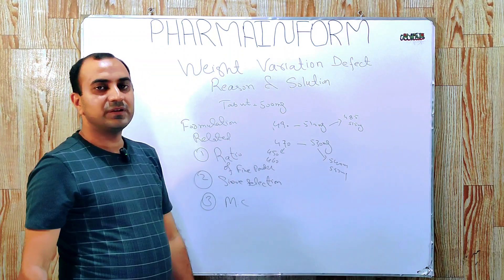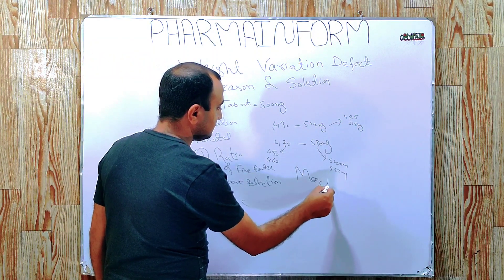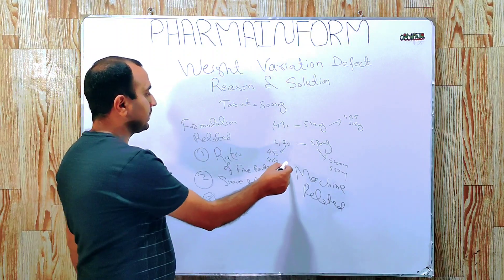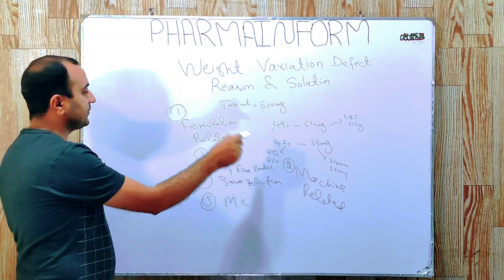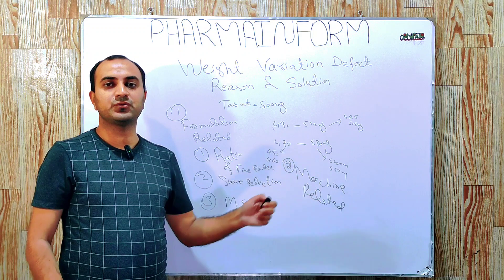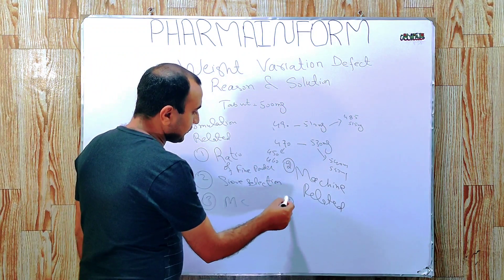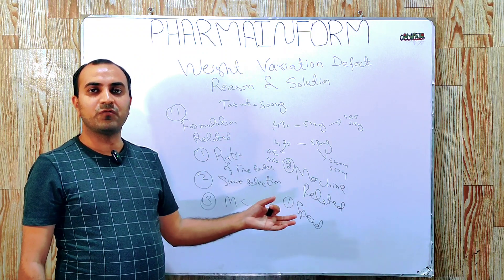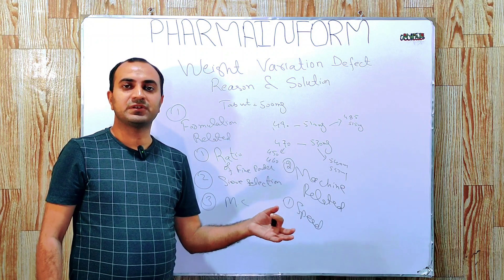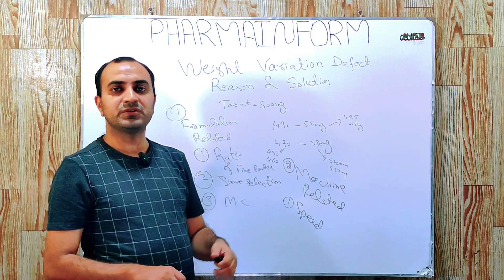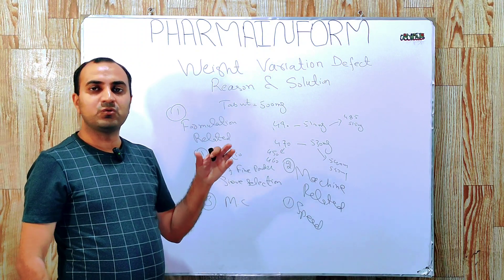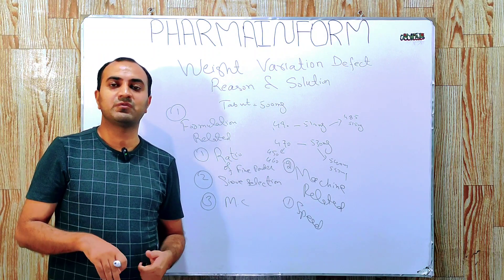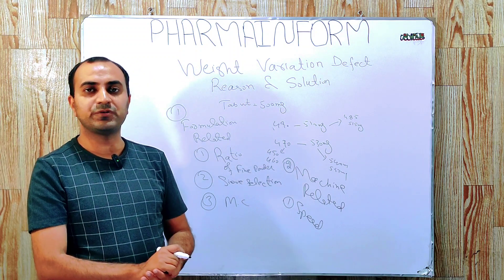The next category is machine related issues — what machine related issues result in weight variation? The first machine related issue is speed. If your machine speed is very high but your feeding of granules or supply to the dies is lower, it will result in weight variation. This function is available in advanced machines where you can control the speed of feeding granules or powders to the dies. Make a synchronization between machine speed and feeding of granules or powders to the dies.